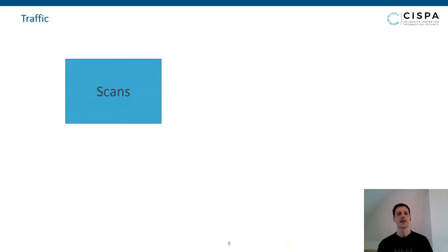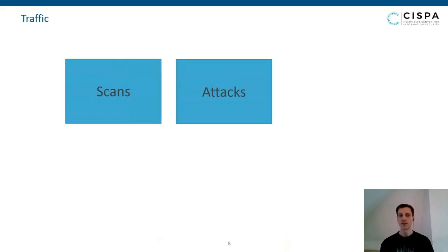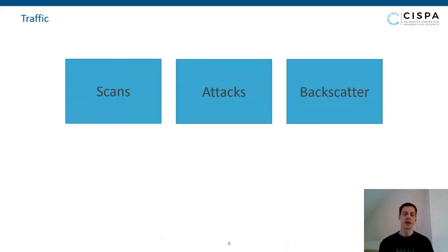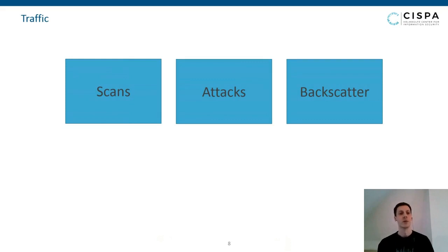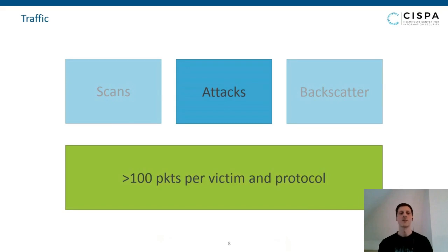Traffic we see at the honeypot roughly falls into three categories: scans (people looking for amplifiers to use in subsequent attacks), actual attack traffic, and backscatter from random stuff that reaches the system. We are only interested in looking at attacks. Our conservative filter defines an event as an attack only if we see more than 100 targets per victim and protocol in less than one hour.